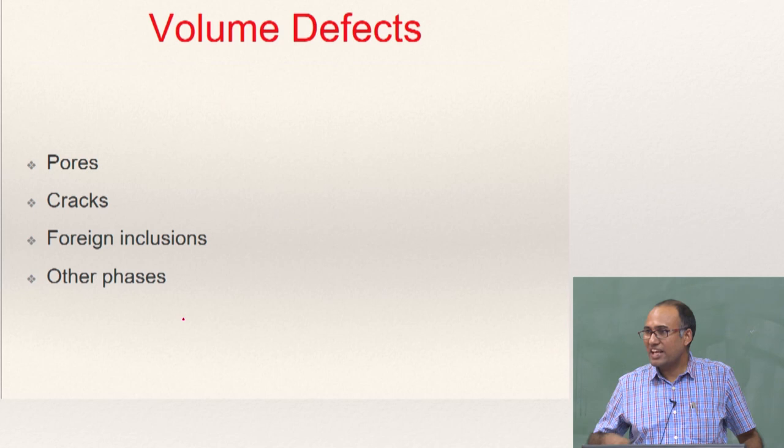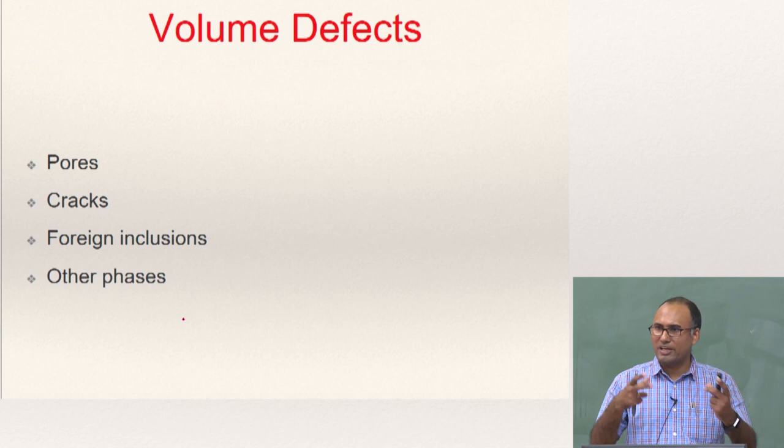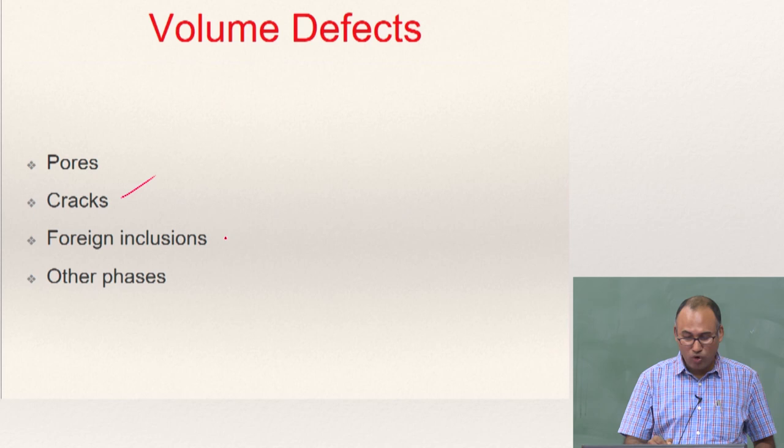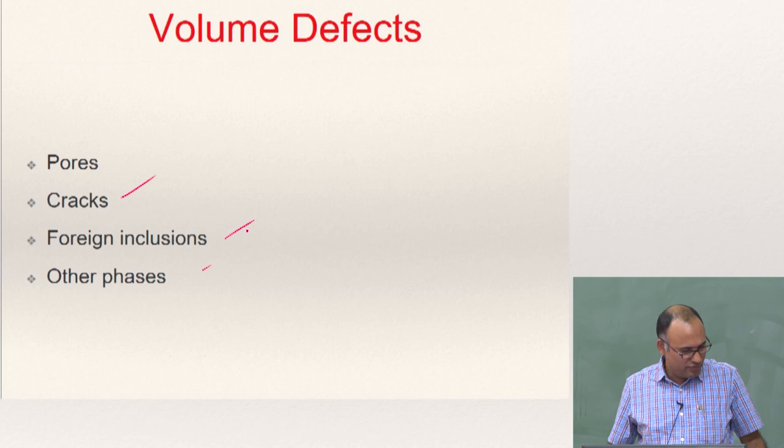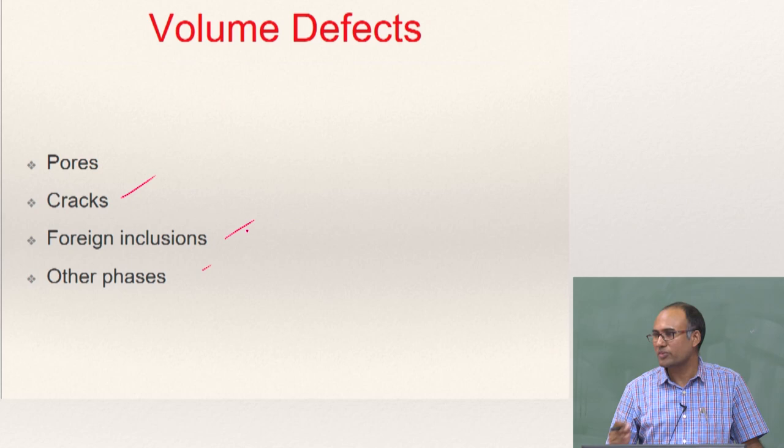The next level of defects are volume defects, like pores — if you have porosity in a material, that is a volume defect — as well as cracks, foreign inclusions, and other phases. These are other kinds of defects that you can have in materials, and we will look at their effect on plastic deformation.